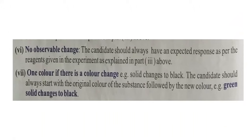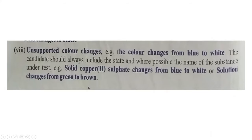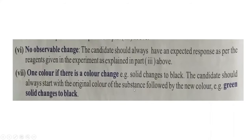Regarding color: if there is a color change — for example, if you are heating a green or white substance that changes to black — do not write 'the solid changes to black.' You will get zero. You must give the original color and then the new color. For example: 'green solid changes to black.' Don't just write 'the solid changes to black.'